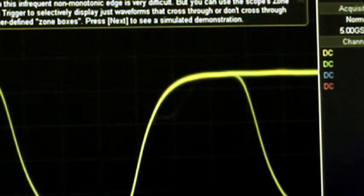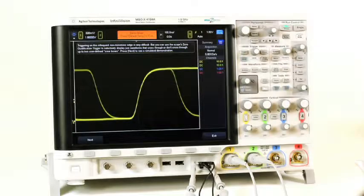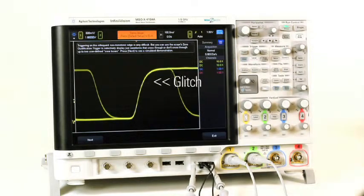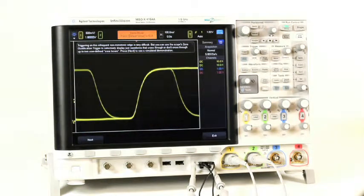Here is an example of a digital signal that has a non-monotonic edge that occurs very infrequently. It appears to be happening often but that is because of the 4000X series 1 million waveforms per second update rate. Once a customer has seen this anomaly, they simply touch the screen to draw a box this anomalous signal must pass through.